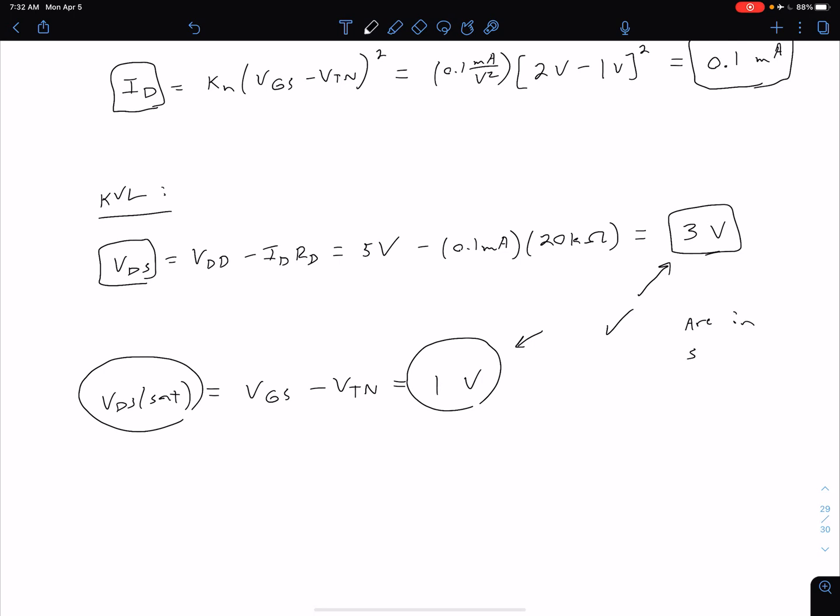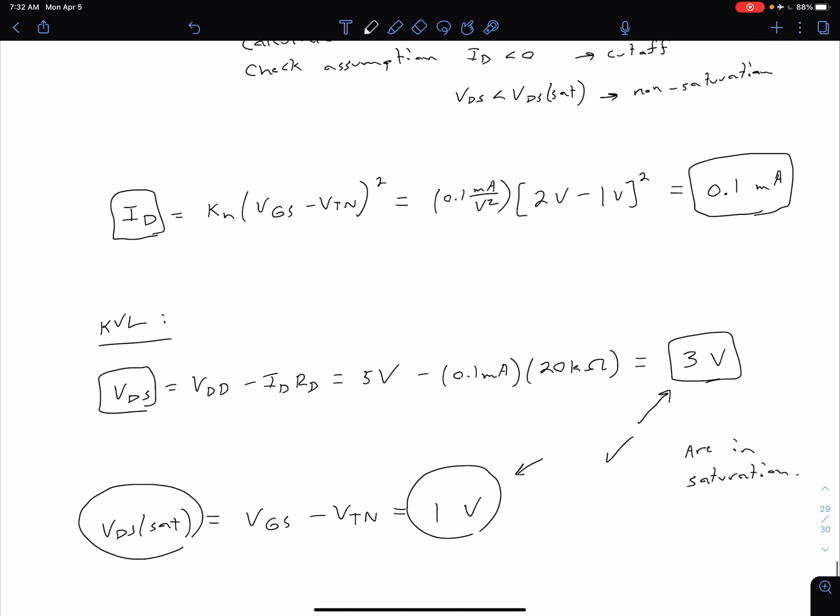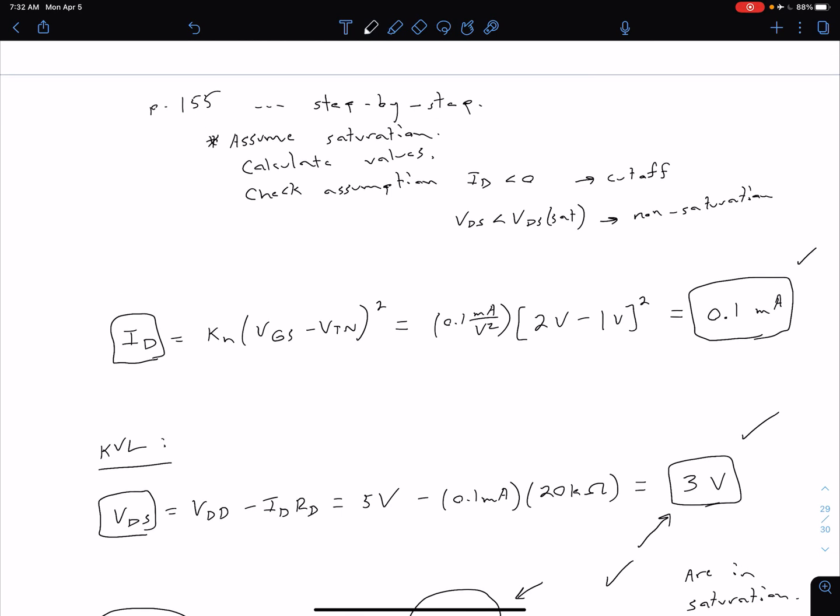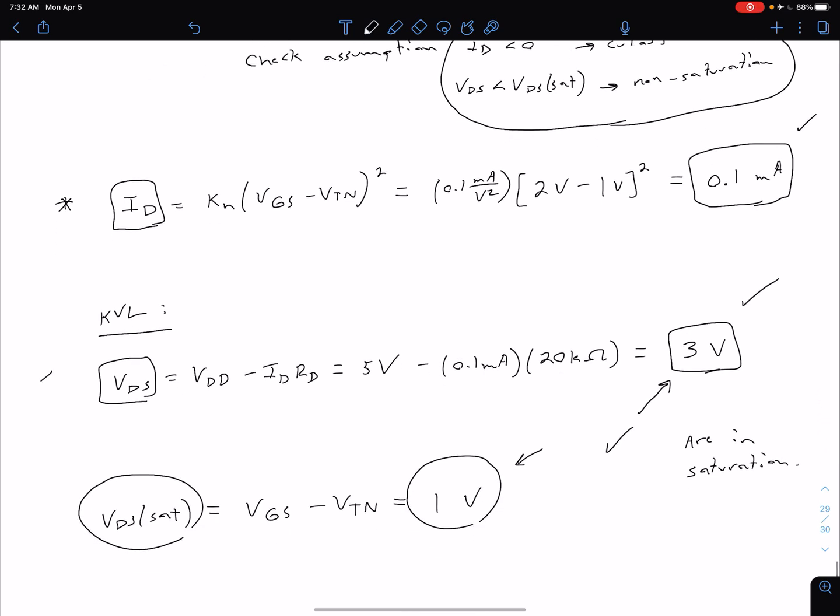So we are in our saturation mode. And so that means our equations up here were appropriate, and our ID is actually 0.1 milliamp, and our VDS is actually 3 volts. Again, if our assumption was not correct, we would see one of these two things happening. If we were in the non-saturation mode, we would have to go back and use a different equation for our ID, but we could use this same process of KVL to find our VDS once our ID is known.